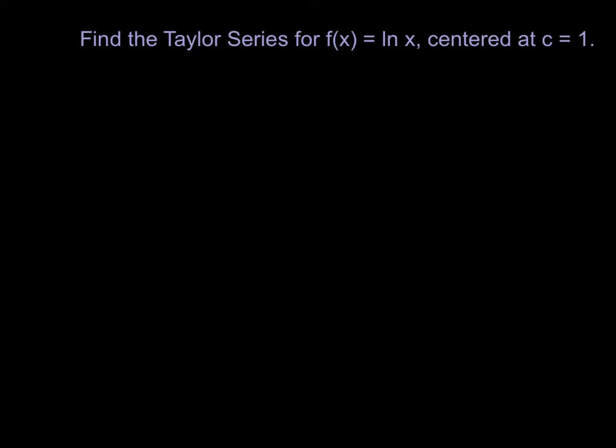Find the Taylor series for the function natural log of x centered at c equals 1. The first natural question is why are we asking for a Taylor series and not specifically a Maclaurin series? A Maclaurin series is a special case of a Taylor series where we center our focus at the point c equals 0. That would never work for ln of x, because 0 is not in the domain of ln of x. 1 is in the domain, and not only that, but ln of 1 is a nice easy value to compute.